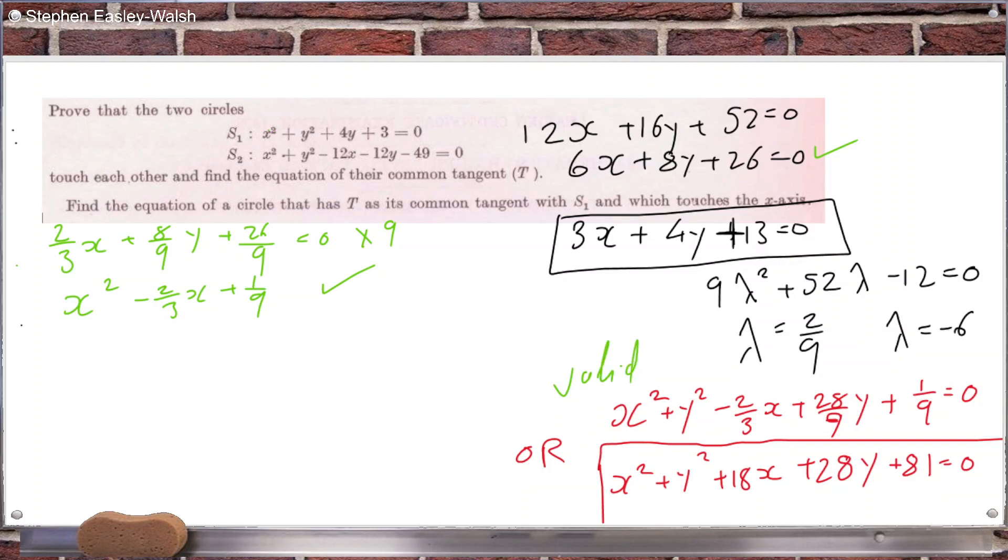Okay. Ugly but valid. And then let's have a look at the second circle we found. Does it have the correct common tangent, and does it touch the x-axis? Now, it doesn't say it explicitly. I'm assuming touch the x-axis means touches as a tangent at one point. I just wish they didn't say it like that, because it has me doubting.